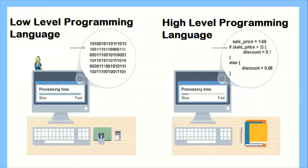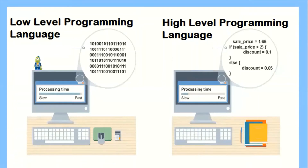There is a comparison of low-level language and high-level language. We can see two computers — in one computer there is a program in the form of machine language, 0s and 1s, and that program runs very quickly. The processing time is very fast because the instructions are closer to the computer hardware.